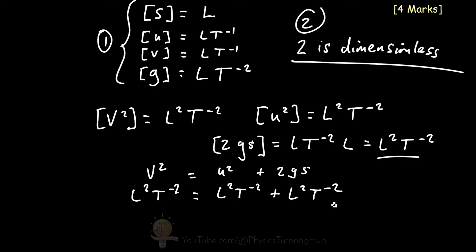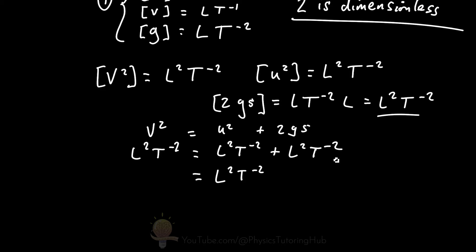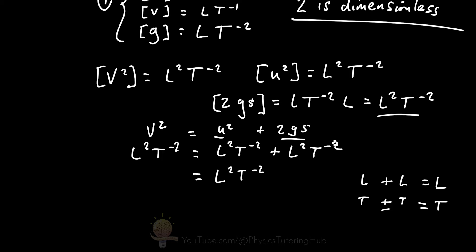Tidying this up, we've got length squared multiplied by time to the minus two. Each term has the same dimensions. On the left-hand side we've got length squared times time to the negative two, which equals length squared times time to the minus two, plus length squared times time to the minus two. When two terms with the same dimensions are added or subtracted, the dimensions reduce to L squared T to the minus two. To get the final mark, you have to show that the formula is dimensionally consistent because each term in our equation has the same dimensions.